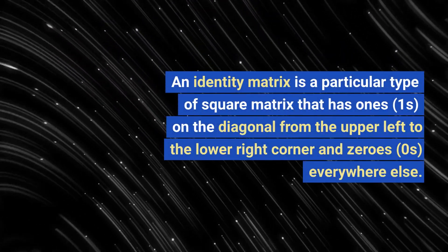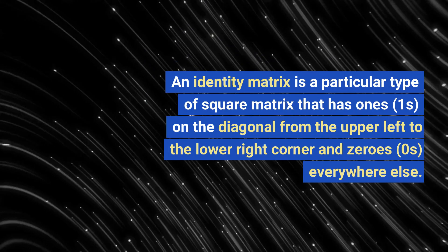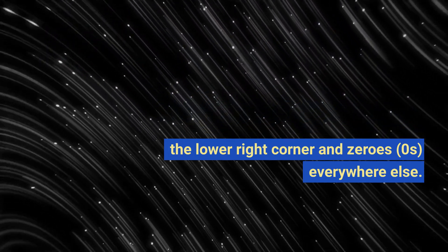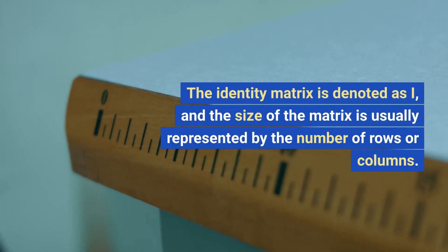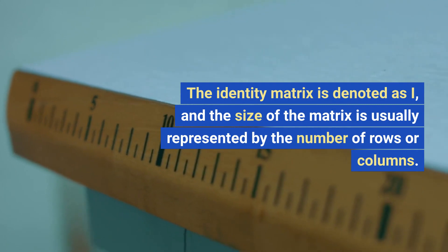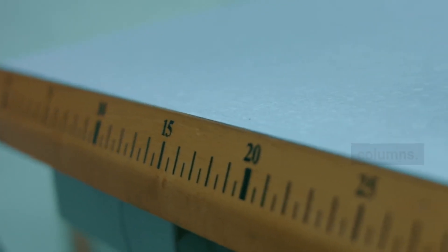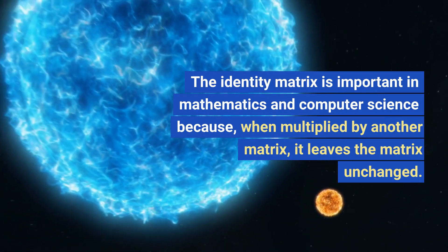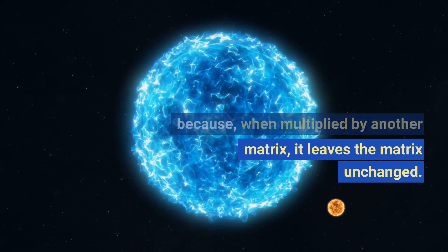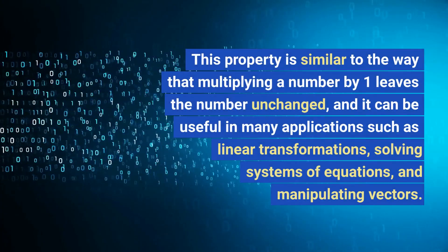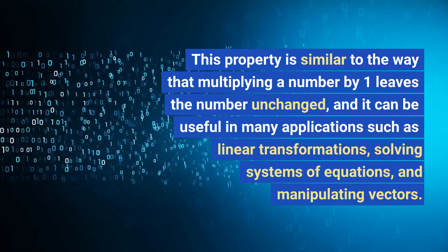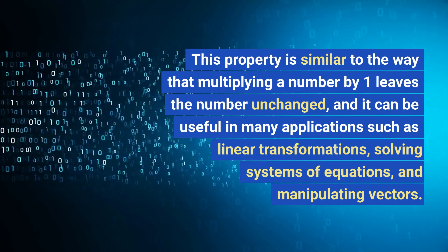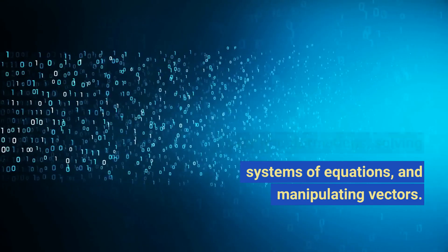An identity matrix is a particular type of square matrix that has ones on the diagonal from the upper left to the lower right corner and zeros everywhere else. The identity matrix is denoted as I, and the size of the matrix is usually represented by the number of rows or columns. When multiplied by another matrix, it leaves the matrix unchanged. This property is similar to the way that multiplying a number by one leaves the number unchanged, and it can be useful in many applications such as linear transformations, solving systems of equations, and manipulating vectors.